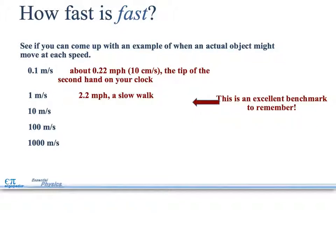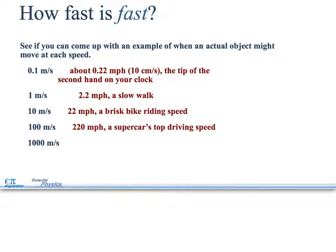This is an excellent benchmark to remember. Remember that you walk at 2.2 miles per hour or 1 meter per second. This 10 meters per second is 22 miles per hour. This is a brisk bike riding speed. 220 miles per hour is a supercar's top driving speed. And the last one, 2,200 miles per hour, about the F-14 fighter jet's top speed.